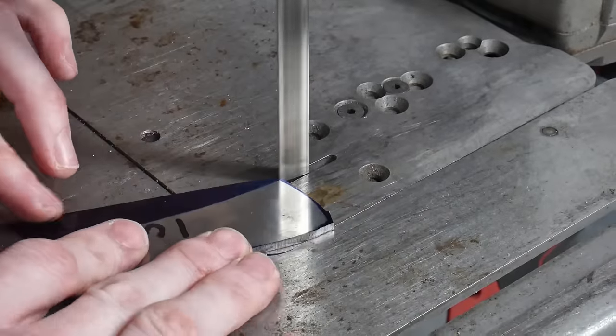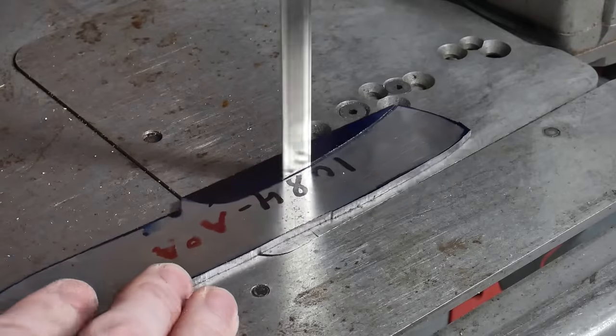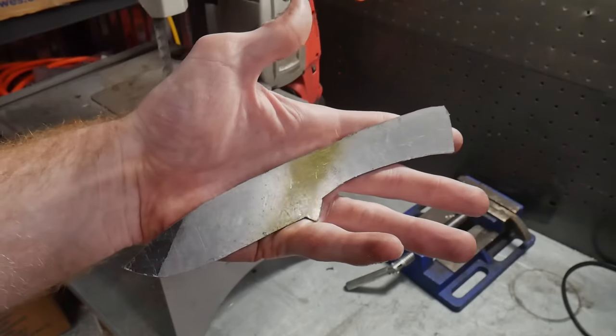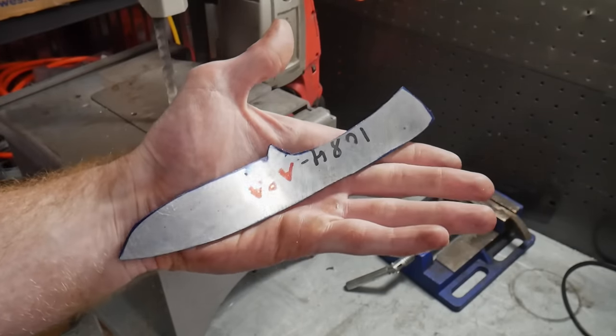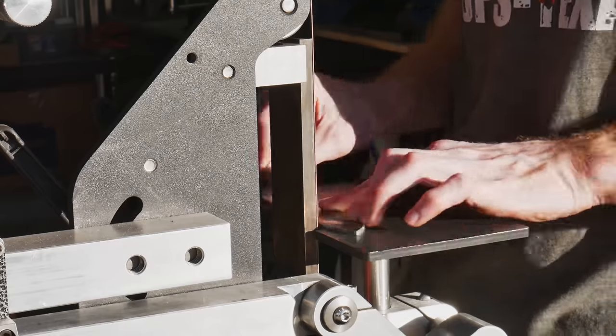The first step is to cut out the rough profile. I like doing this with my Bauer porter band from Harbor Freight. However, many makers like cutting out their blanks with a cutoff wheel on the angle grinder. Either way, the goal is to remove bulk material and reduce the amount of necessary grinding.